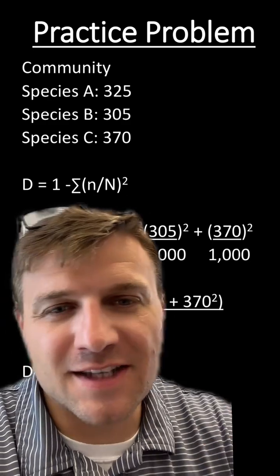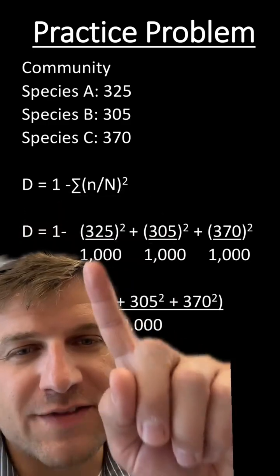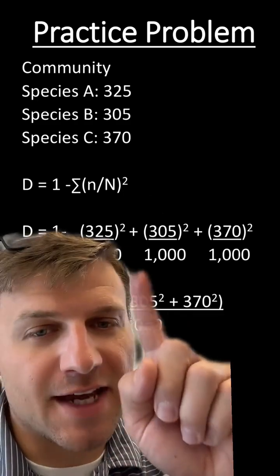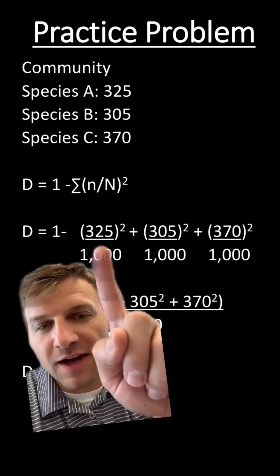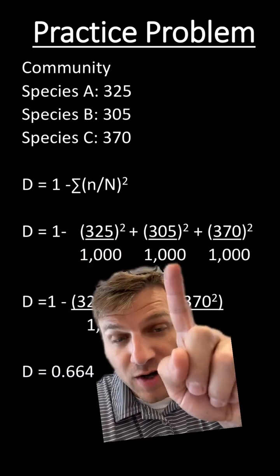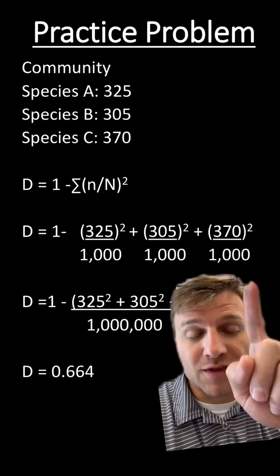So this big E is called a sigma. It means the sum of. So we have to take the sum of all three of these species and take 1 minus that number. So we place 325 over 1,000 and square it, 305 over 1,000 and square it, and 370 over 1,000 and square it.